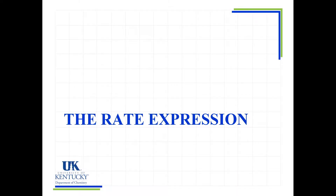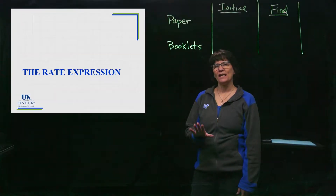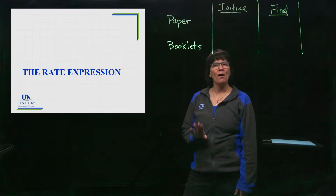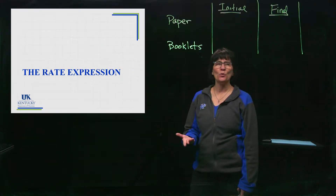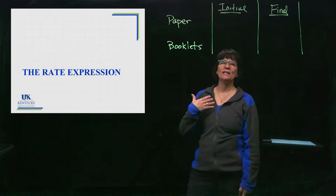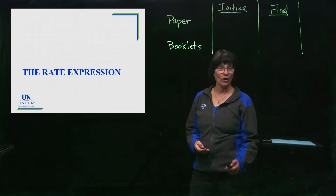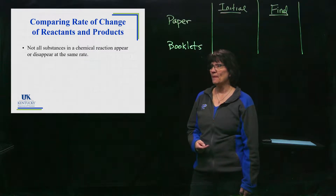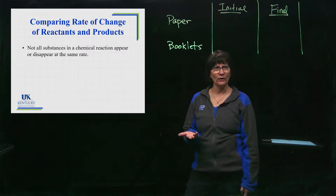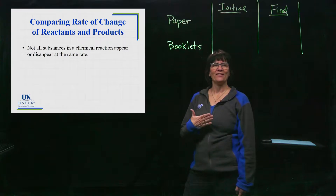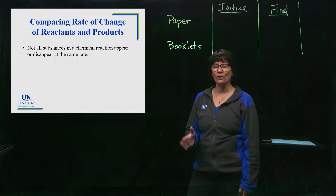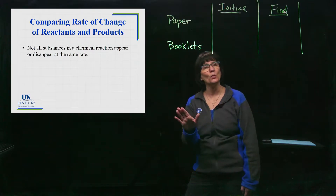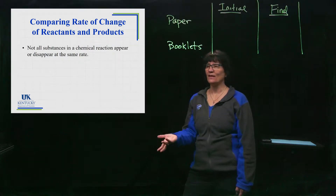In this lesson we're going to look at something called a rate expression — a way of defining the rate of a reaction by monitoring the change of any reactant or product. It's a continuation of what we looked at last time, but now we need to incorporate coefficients that aren't always one. Not all substances are going to appear or disappear at the same rate, so you have to take that into account when comparing between things.